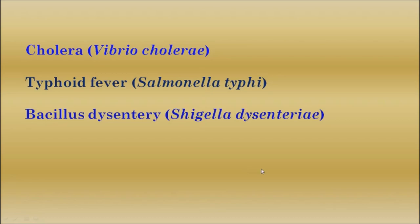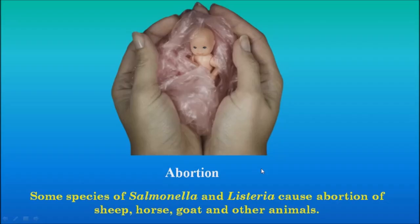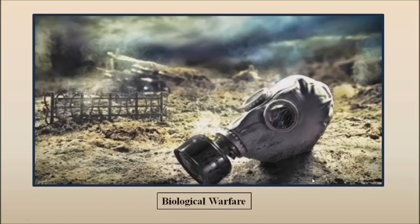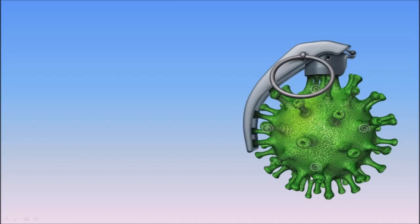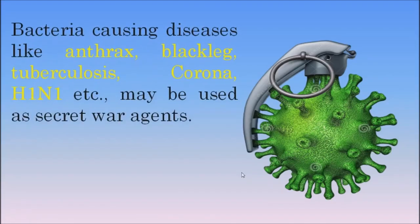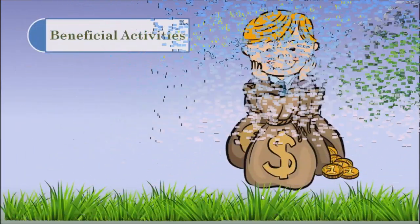The next harmful activity is abortion. Some species of Salmonella and Listeria cause abortion in sheep, horse, goat, humans and other animals. The next harmful activity of microorganisms is biological warfare. Microbes causing diseases like anthrax, black leg, tuberculosis, and viruses like corona and H1N1 may be used as secret war agents.